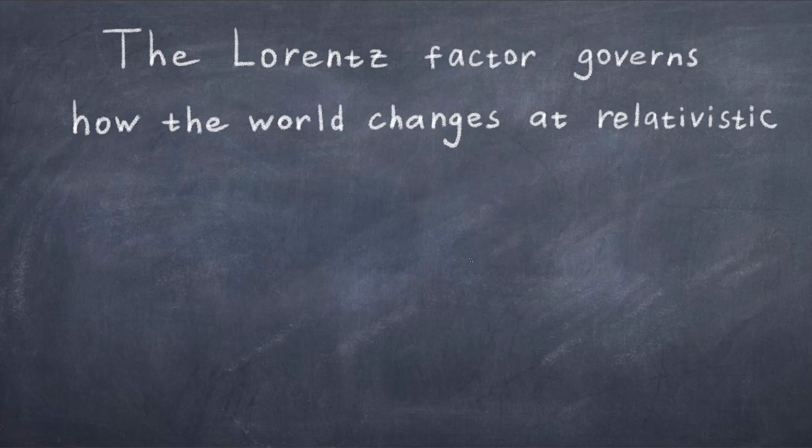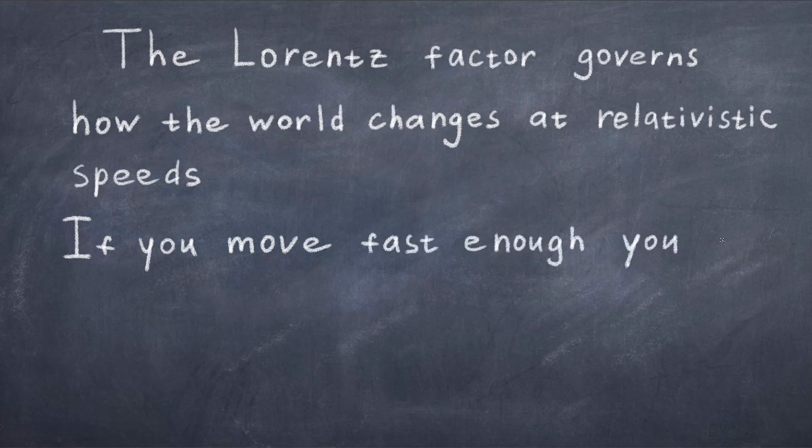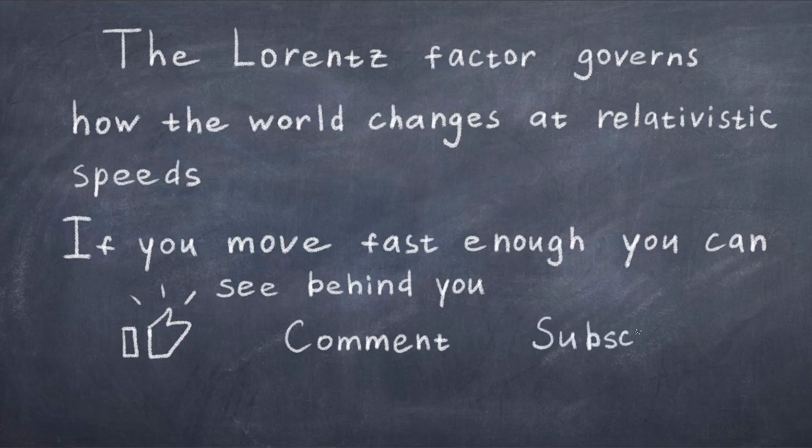You might ask what you would see if you started moving at relativistic speeds, and the answer is that you would actually begin to see how spacetime curves around you and you would start to see behind you as the spacetime curves. In this limit, where you travel at the speed of light, you would see everything around you, even what's behind you. This is very weird. But don't expect to ever be fast enough to actually experience this, because you would need a crazy amount of energy to accelerate a human to this velocity.